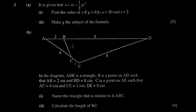Let's move to the second part. We have a triangle here — in the diagram, ADE is a triangle, and B is a point on AD. You're told that the ratio is 2 to 8 and 4 to 1. Here you're asked to name the triangle which is similar to triangle ABC. There are only two triangles, so you can never go wrong, but it's good to know exactly how to identify them. So how do you prove that two triangles are similar?